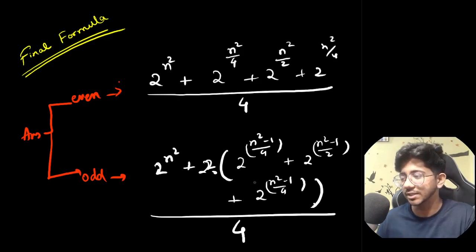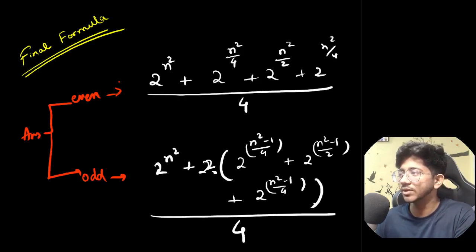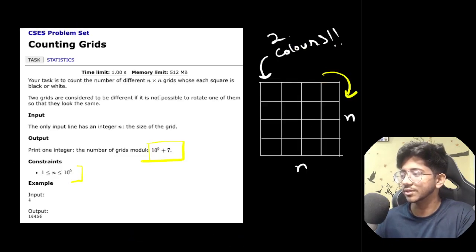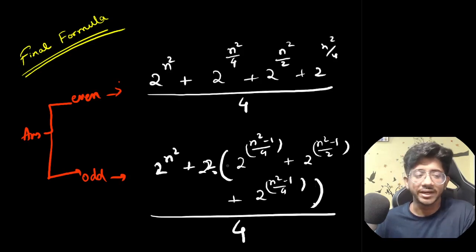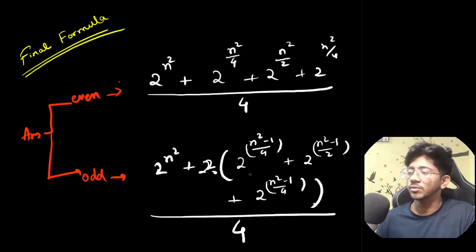Since the problem asks for the answer modulo 10^9+7, you calculate each 2^(exponent) term using binary exponentiation. Note that n² can be up to ~10^18 so compute exponents carefully without overflow issues. Then invert 4 modulo 10^9+7 using modular inverse to perform the final division.